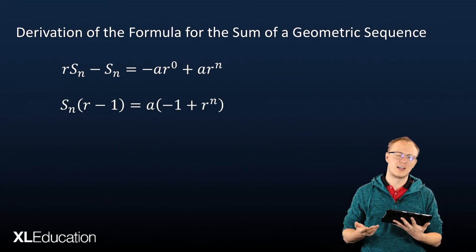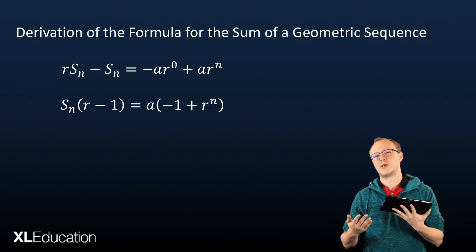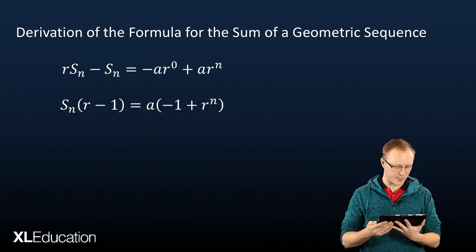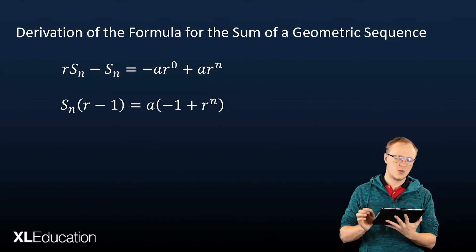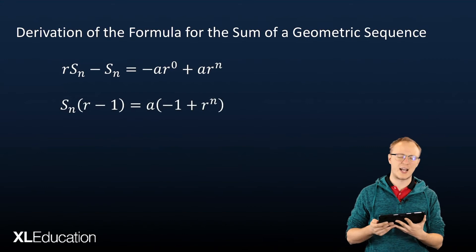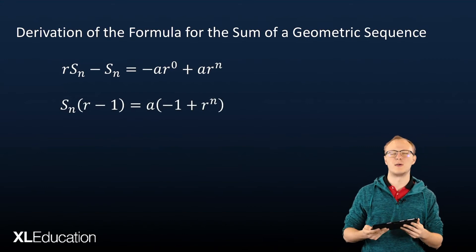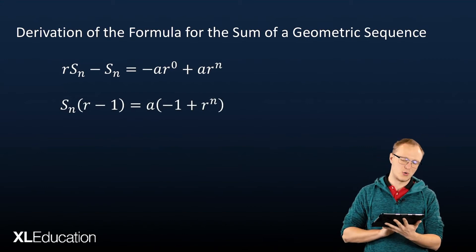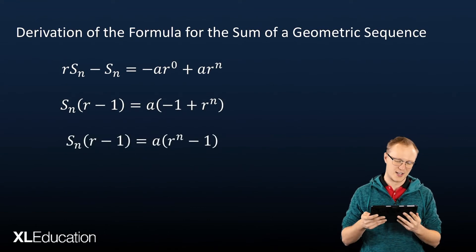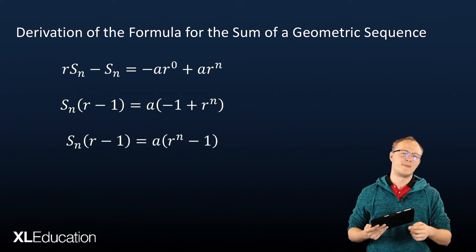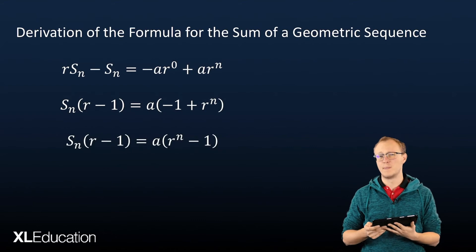And on the right, we can take out a common factor of a, which we know is the first term in any sequence. So then what I'm going to do is take the bracket next to the a there, the minus 1 plus r to the n, and I'm just going to rearrange it and call it r to the n minus 1, because I think it looks a bit better. And for you, it might look a little bit more familiar.